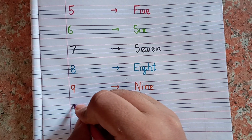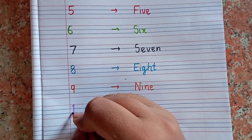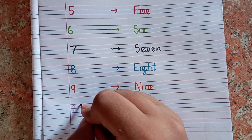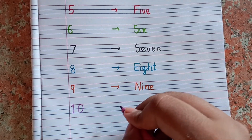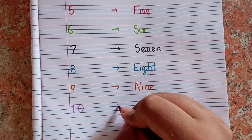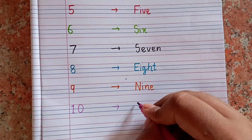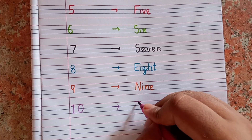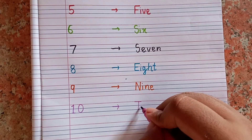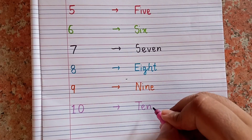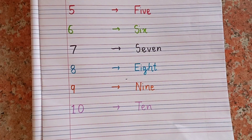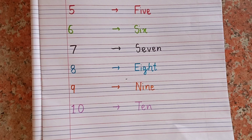After 9, next number will be 10. 1, 0 — 10. And spelling of 10 is T-E-N. 10, T-E-N.